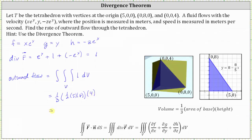Inside the parentheses, we have one-half times 40, which is 20. 20 times four is 80. 80 times one-third is 80/3. This is the outward flow, and therefore the units are cubic meters per second. Or as a decimal, approximately 26.67 cubic meters per second.